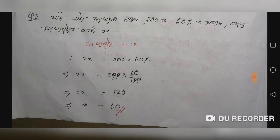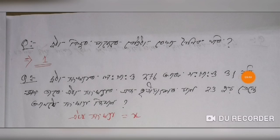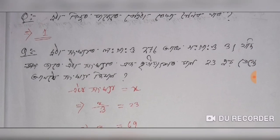2x is equal to the hathis. Since this is equal to the hathis, I will equal to 200 into 60 percent. So this is equal to 120, and x is equal to hathis. This is the first step. The second step is 1 of 10. This step is 176 and this step is 3.